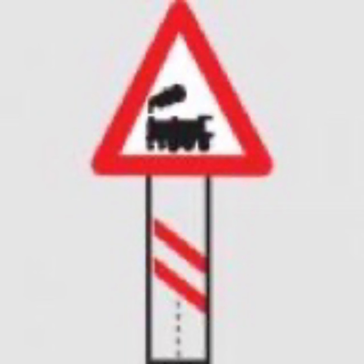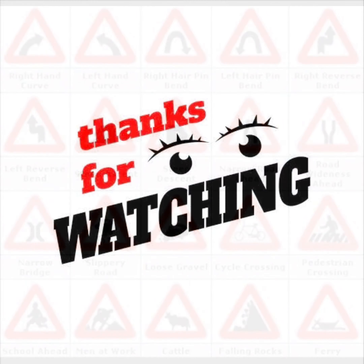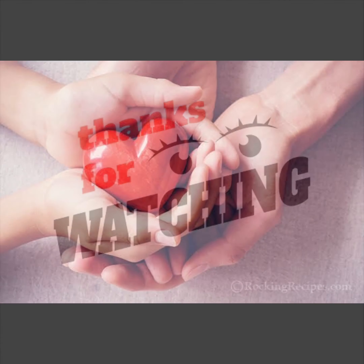Unguarded level crossing: this sign indicates that there is a railway crossing ahead and it is not manned by any person. This unguarded railway crossing has to be crossed by the driver very carefully after ensuring that no train is approaching the crossing. With this, we cover all the cautionary signs.